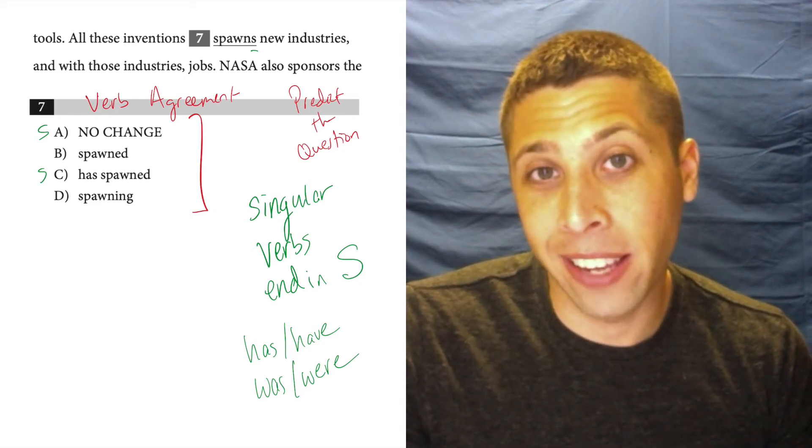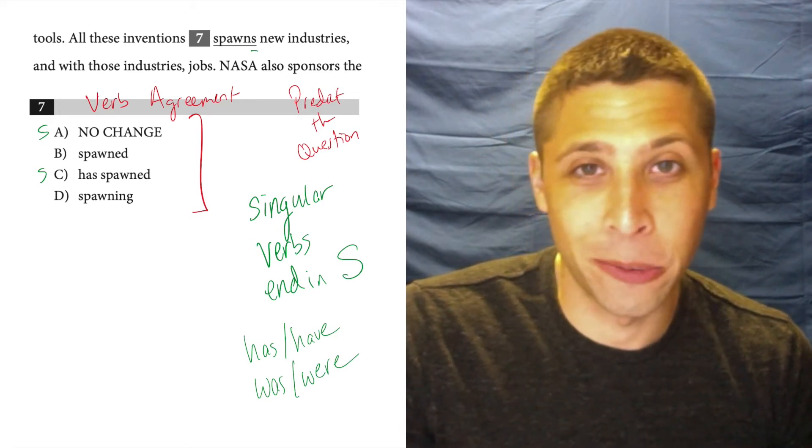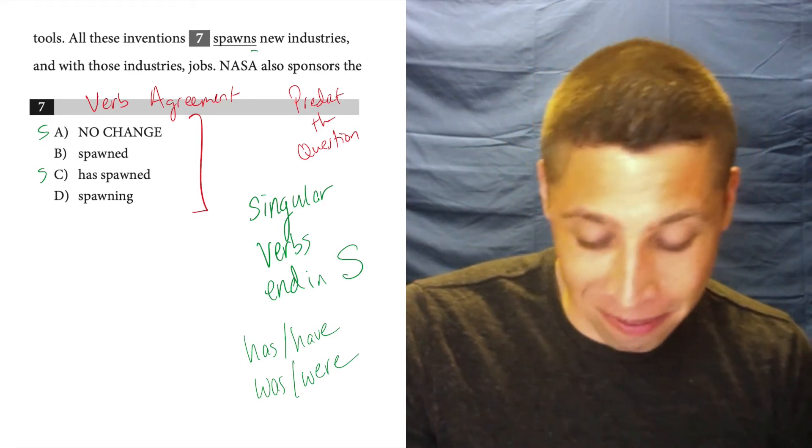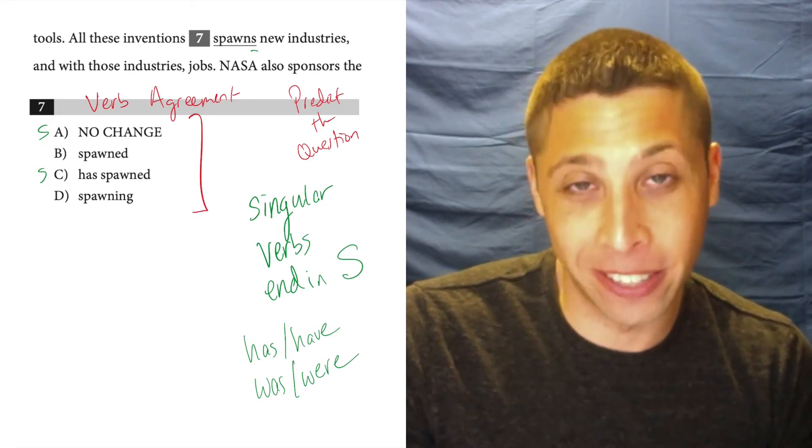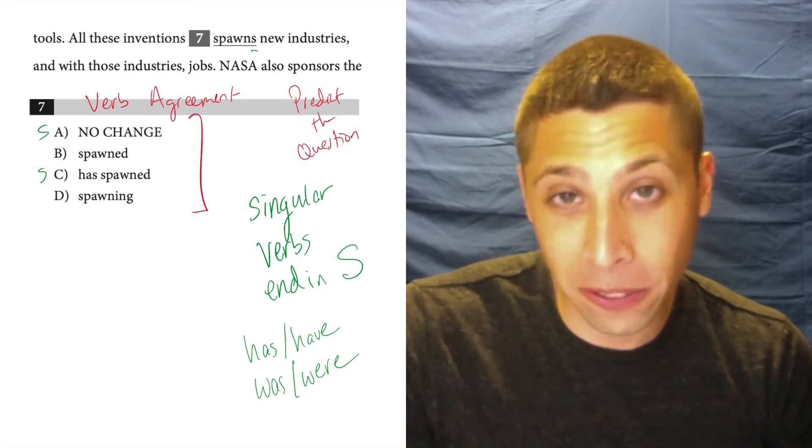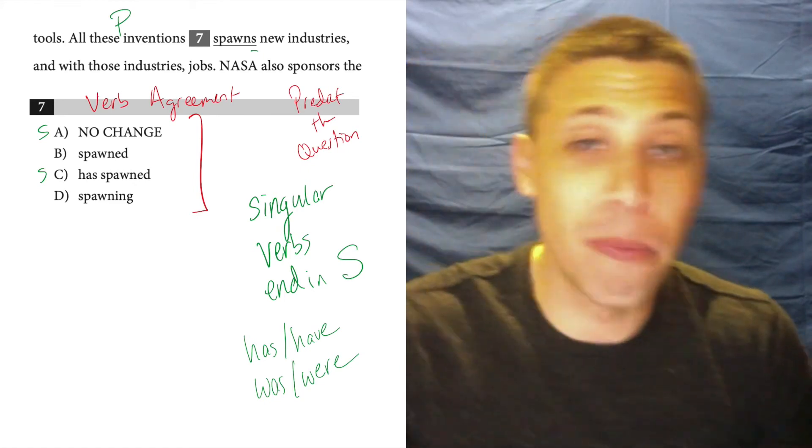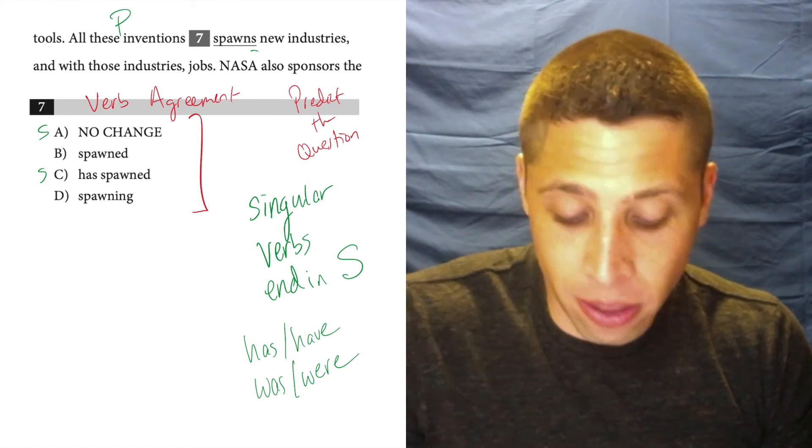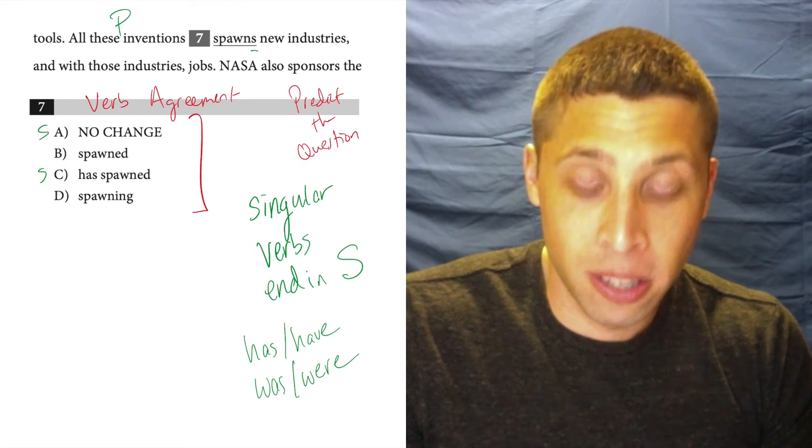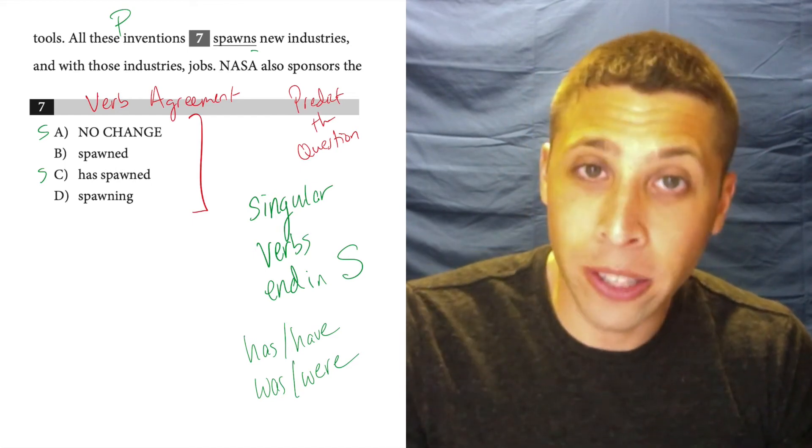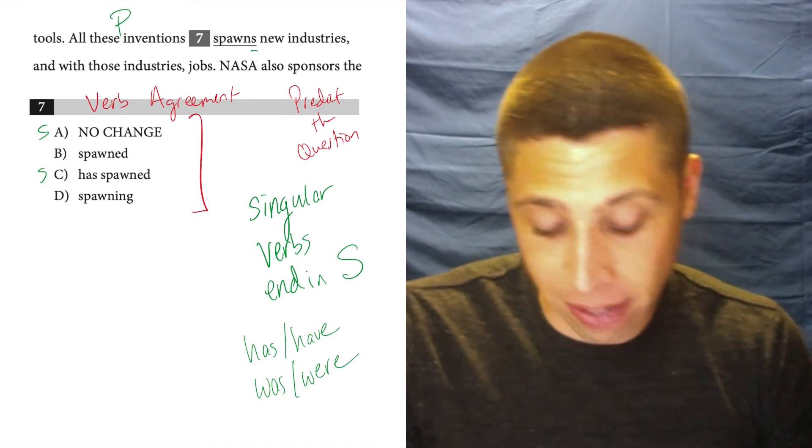We could say spawned is such a weird word to use, but let's see. Let's look at this the way that it's written here and see what it's all of these inventions. Is that singular or plural? Well, that's pretty clearly plural, right? It's multiple inventions. So we could say all these inventions spawned new industries. That sounds good and that is the right answer.